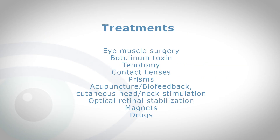When it comes to treatments, putting all types together, a variety of things have been tried. Eye muscle surgery, where the muscles are realigned — sometimes to slacken the eye so they wobble less. Instead of surgery, one can use botulinum toxin as a temporary paralysis of the muscles. Tenotomy is where the muscles are taken off and then put back on again, which affects how the brain controls eye movements.